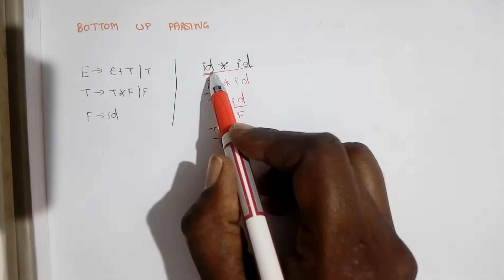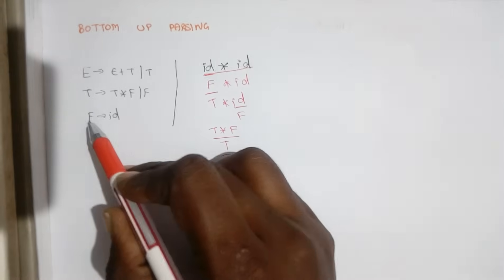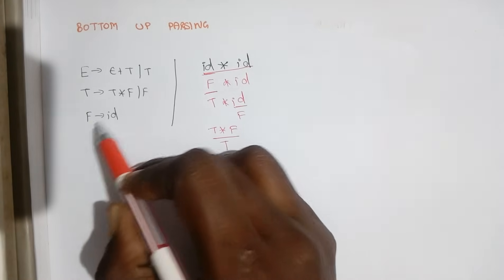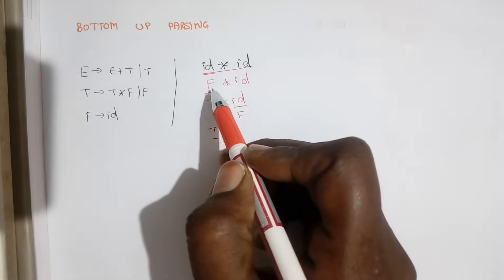each step we check the body of the production and whichever variable corresponds to that, we are going to replace that with this variable.